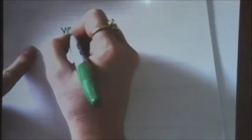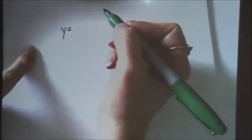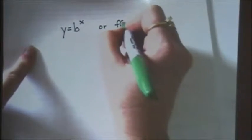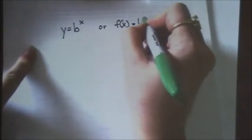Just wanted to clarify a few things in case you were unaware that the first section, 4.1, is about exponentials. Exponentials are anything that are written in this format: y equals b to the x, or f of x equals b to the x.